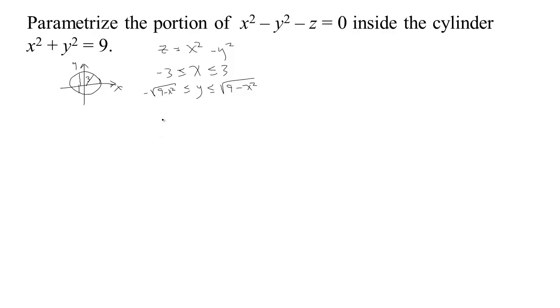So our parametrization is just this: our function of x and y is x is x, y is y, and z is x squared minus y squared. That's one possibility for parametrizing this with these bounds on our parameters x and y.